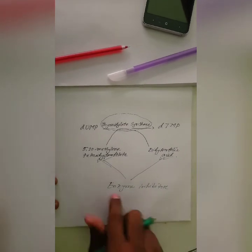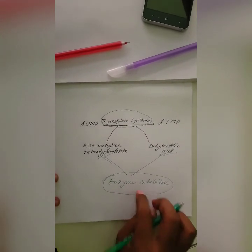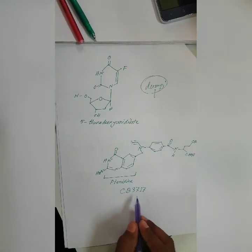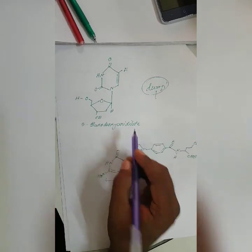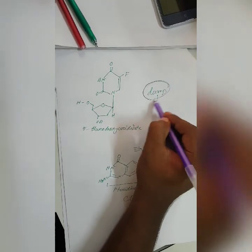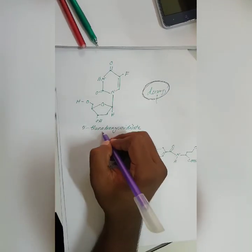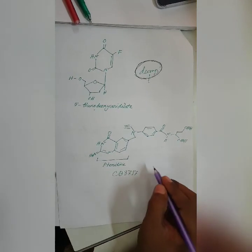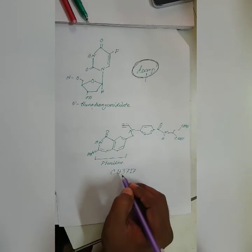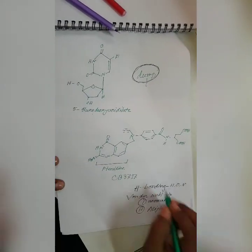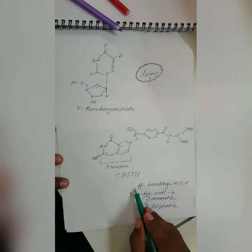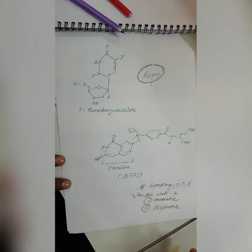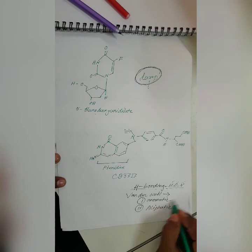This is a potential enzyme inhibitor. The enzyme inhibitor has a binding point involving cofactors, H2O, nitrogen, and oxygen. This is an aromatic interaction, which is called Van der Waals interaction. These are two different components involved in aromatic Van der Waals interaction.